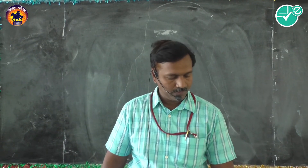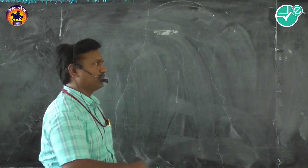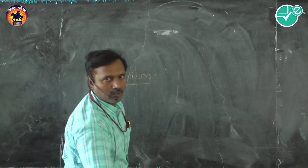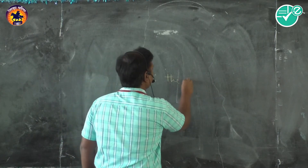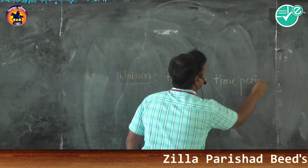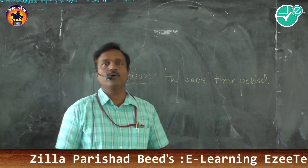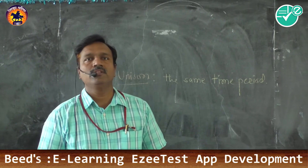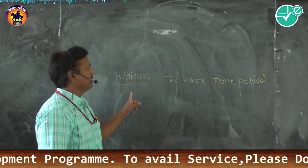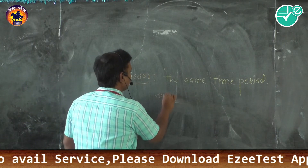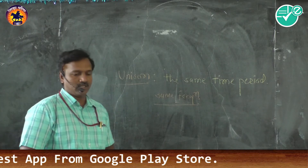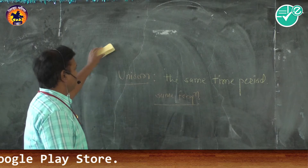The next term is unison. Unison means the same time period — that is, if two bodies are vibrating and they are in unison, it means the two bodies are vibrating with the same frequency. So unison refers to bodies vibrating with the same frequencies.